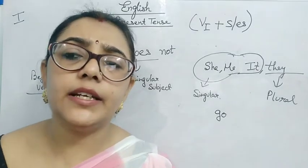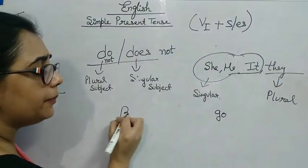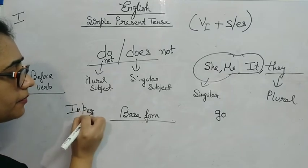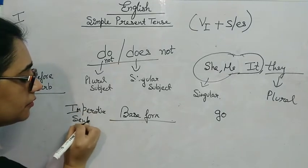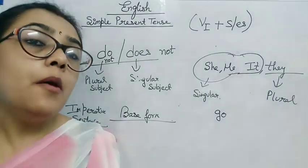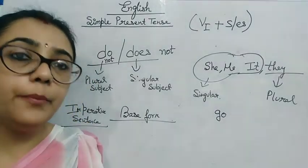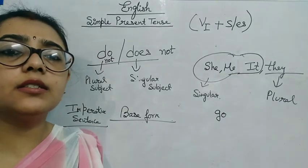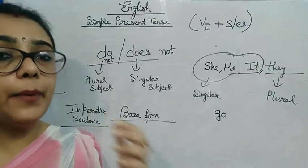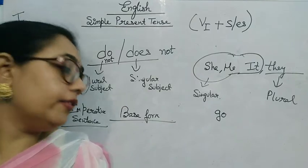Now, what about imperative sentences? In imperative sentences we don't change the form of the verb — we keep the base form only. For example: 'bring a glass of water'. I have not changed the form of the verb; I have just given an order. An imperative sentence is a sentence that contains an order, command, or request.